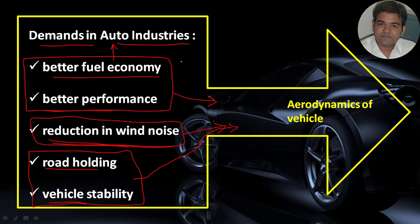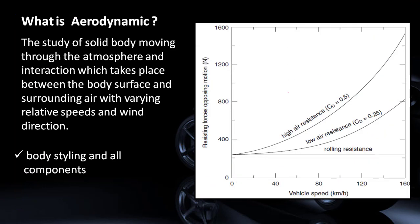Due to these demands, automotive manufacturers are forced to focus on the study of aerodynamic drag and aerodynamic resistance of different body shapes of vehicles. So what is aerodynamics? Aerodynamics is the study of a solid body moving through the atmosphere and the interaction which takes place between the body surface and the surrounding air with varying relative speeds and wind direction. Considering vehicle aerodynamics, it is the study of a vehicle moving through atmospheric air, focusing on the forces and the effects generated by aerodynamics.